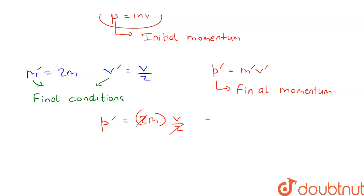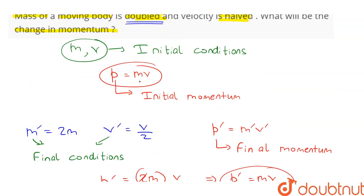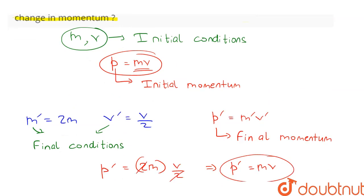2 and 2 can be cancelled. Therefore, p dash is equal to mv, which is the same as the initial momentum p, which is also equal to mv.